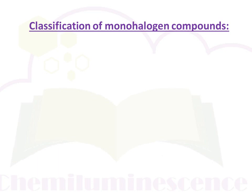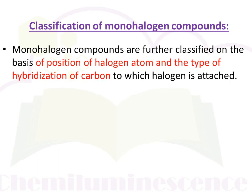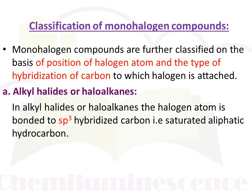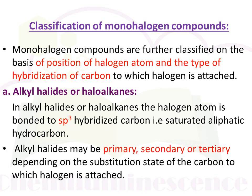Monohalogen compounds are further classified on the basis of the position of the halogen atom and the type of hybridization of the carbon to which the halogen is attached. The first type is alkyl halide, or haloalkane — compounds in which the halogen atom is bonded to an sp³ hybridized carbon atom, that is, saturated aliphatic hydrocarbons. It is further classified into primary, secondary, and tertiary haloalkanes on the basis of the substitution state of the carbon to which the halogen is bonded.